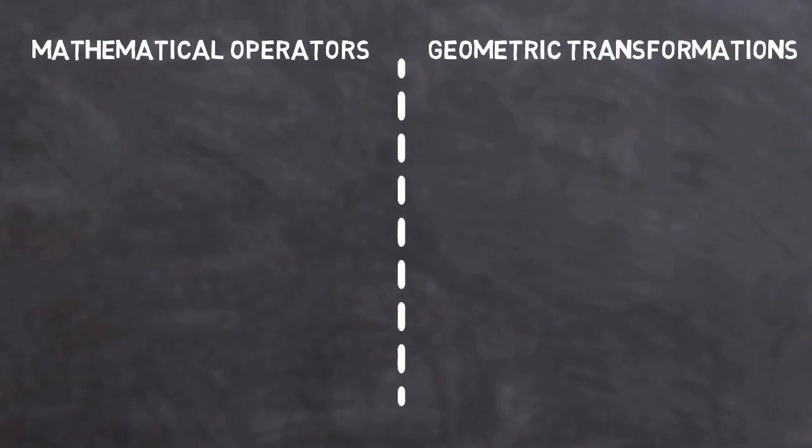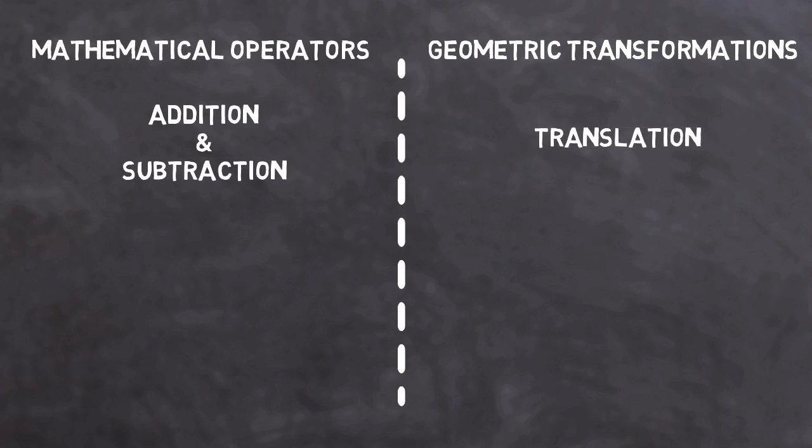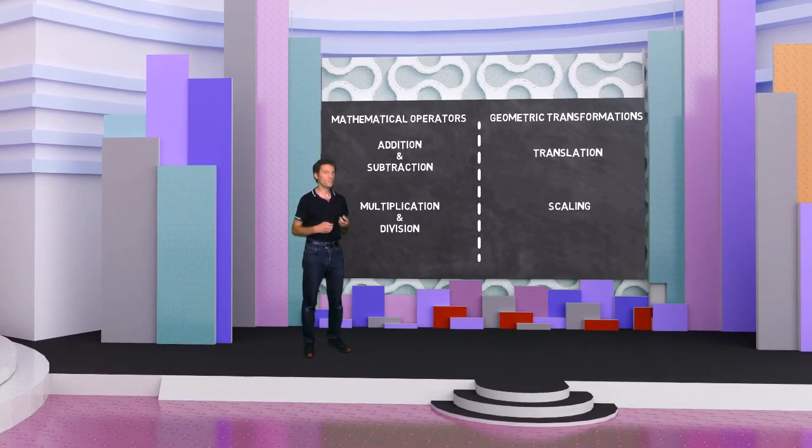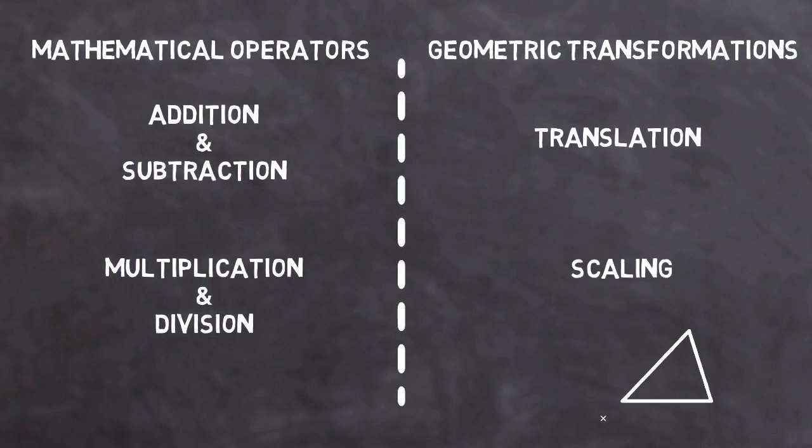Addition and subtraction can translate an object. Addition moves the object to the right, and subtraction moves it back to the left again. Multiplication and division can be used to scale an object, making it larger or smaller. But in the world of geometry, multiplication and division are quite powerful, as they can perform other transformations apart from just scaling. For example, if we scale an object by multiplying it by minus one, we can reflect that object.